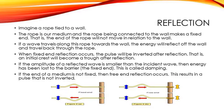Reflection. Imagine a rope is tied to a wall. The rope is our medium and the rope being connected to the wall makes it a fixed end. That is, the end of the rope will not move in relation to the wall. If a wave travels along the rope towards the wall, the energy will reflect off the wall and travel back through the rope. When the fixed end reflection occurs, the pulse will be inverted after the reflection. That is, the initial crest will become a trough after reflection.